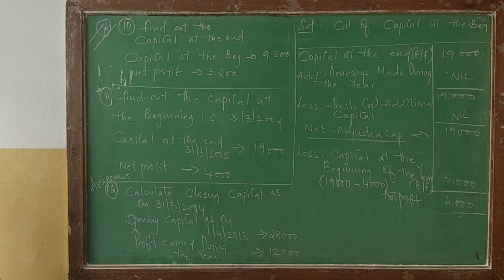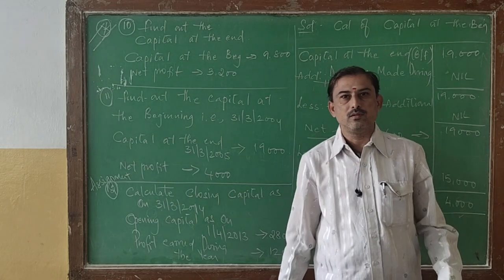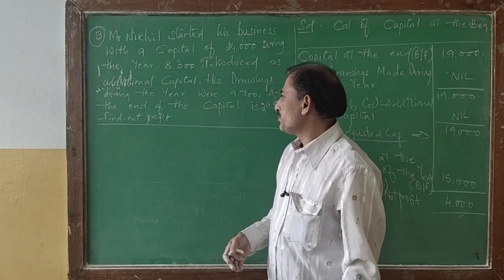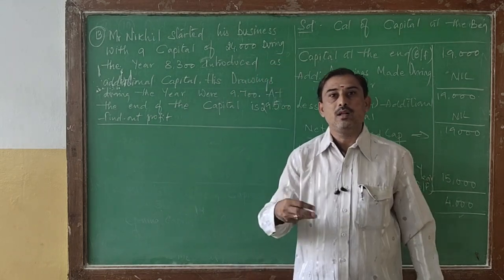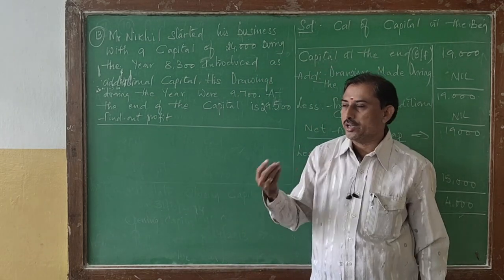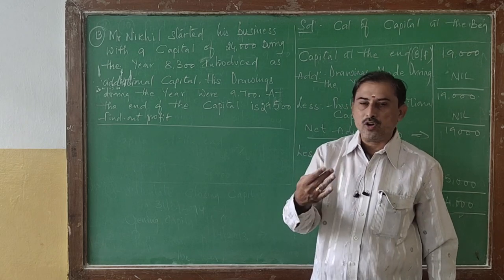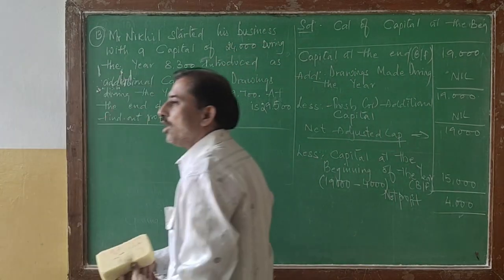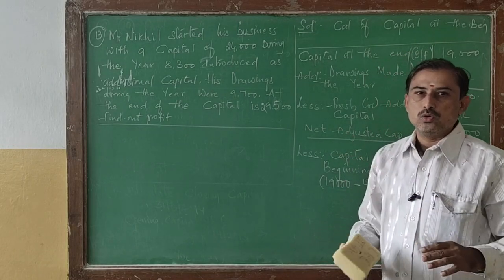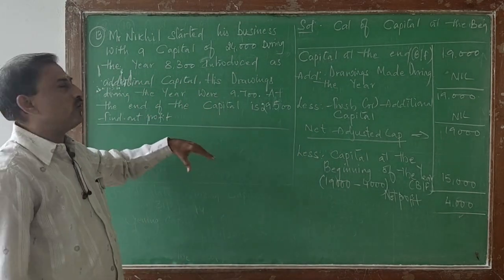Now we will do one more problem which is very important. Always we cannot expect the problem to be given step-wise as capital at the beginning, capital at the end, drawings made, additional capital introduced. It depends on the author or professional person giving us the information — they may give it in the form of a format, a paragraph, or sentences. First, identify what is given and what we have to find.